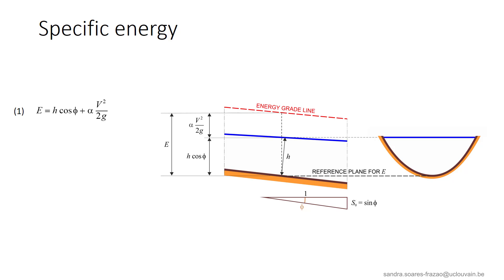The specific energy in a cross section is defined as the average energy per unit weight of liquid, with respect to the local bed elevation. So it can be considered as the average head in the cross section, defined with respect to a specific reference plane.